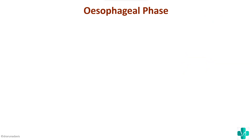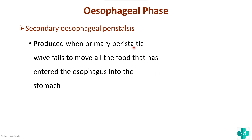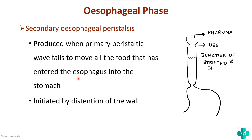Secondary esophageal peristalsis occurs when the primary peristaltic wave fails to move all the food that has entered the esophagus into the stomach. If the primary peristalsis could not propel all the food into the stomach, secondary esophageal peristalsis is initiated by distension of the esophageal wall. Suppose food has not yet reached the stomach — distension of the wall stimulates the intrinsic nervous system, which stimulates secondary esophageal peristalsis, ensuring all the food reaches the stomach.